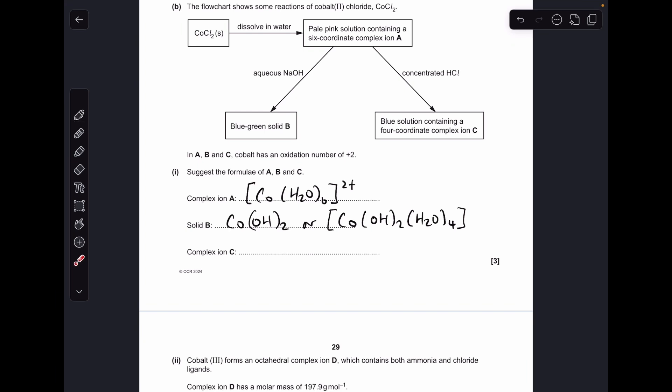And then finally, the four-coordinate complex ion C that's been formed by reacting the hexa-aqua ion with concentrated HCl is going to be that there.